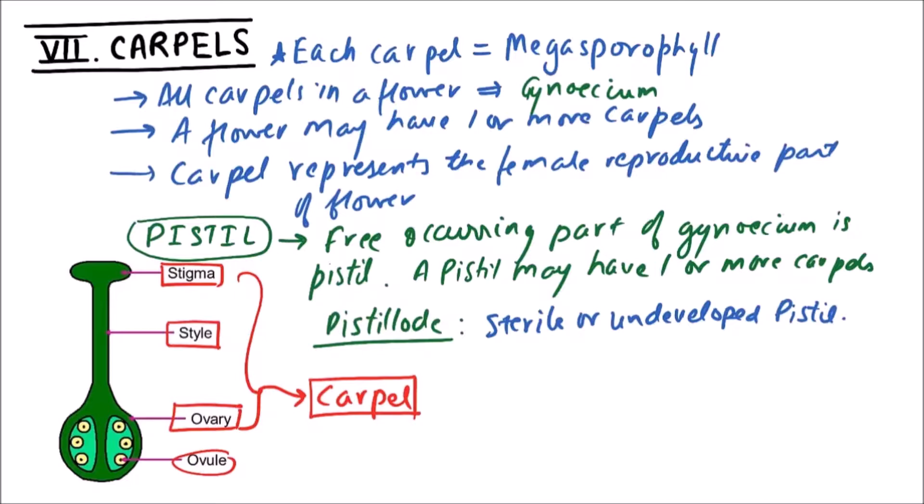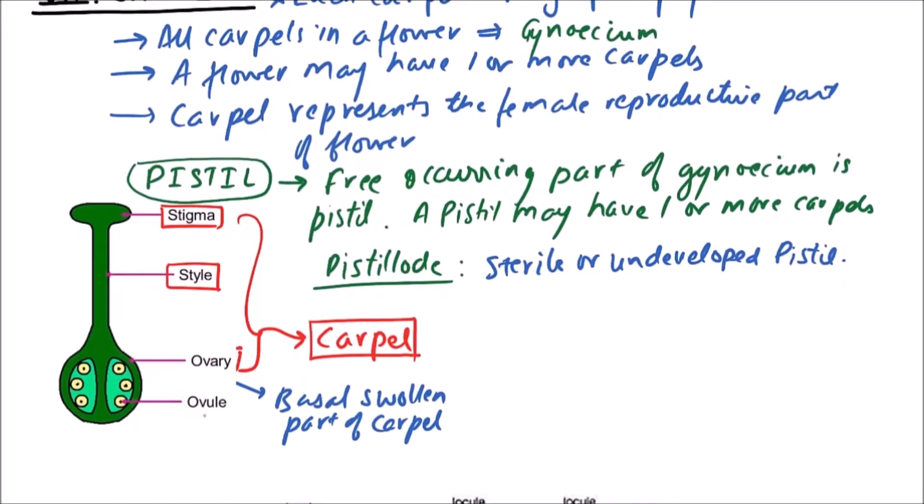Ovary represents the basal swollen part of carpel. It possesses ovules as oval outgrowths.